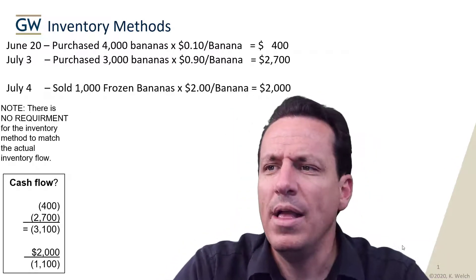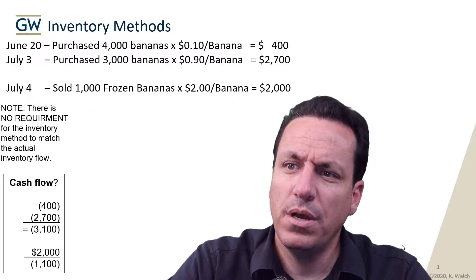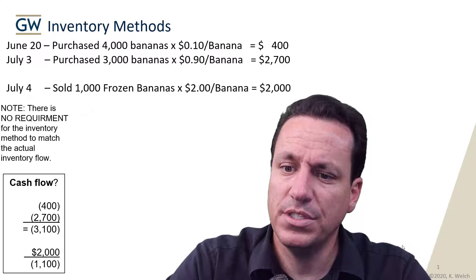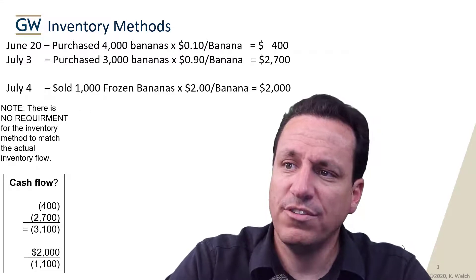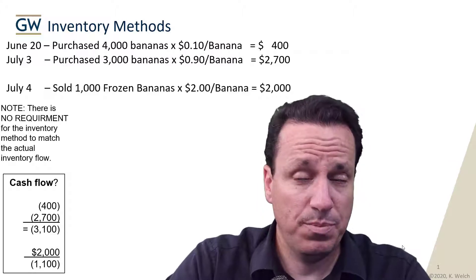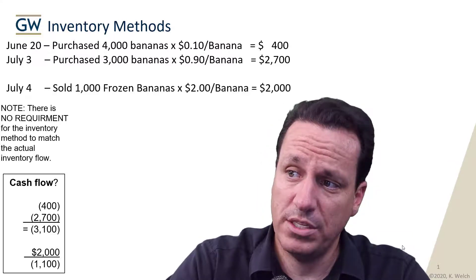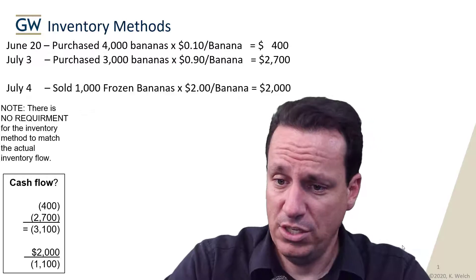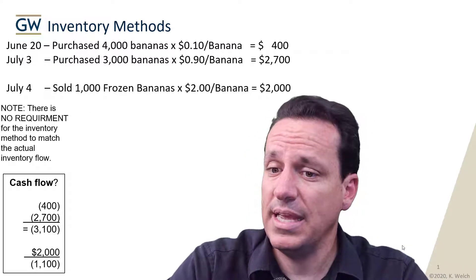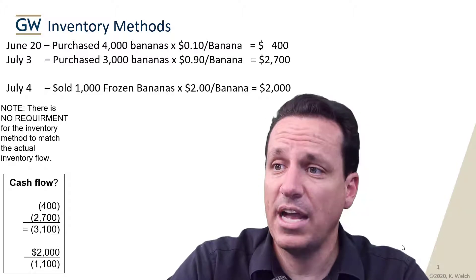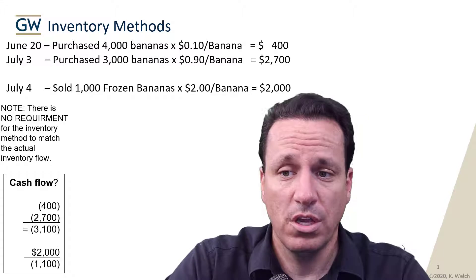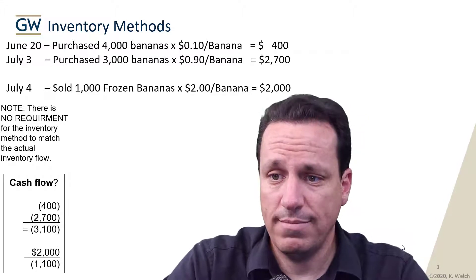We talked about cash flow — how we purchased more inventory than we sold as far as cash sales. If we did cash flow, assuming all our sales were cash, we got about $2,000 in cash and spent $3,100 on inventory over the period. So the net balance is a negative cash balance of $1,100. We have a negative cash outflow of $1,100. There's no assumption involved in that — that's fact.